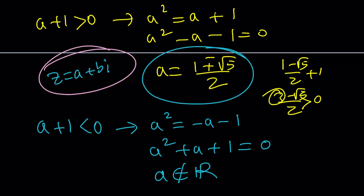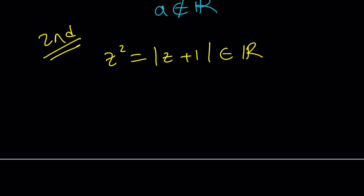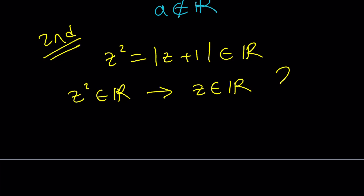Now let's look at the second method. The key observation is that the absolute value of a complex number is always real, so Z squared must also be real. The million-dollar question: if Z squared is real, does that mean Z is also real? The answer is no — it's not always true. For example, I squared equals negative 1, which is real, but I itself is not real.